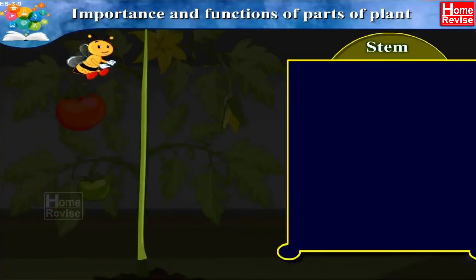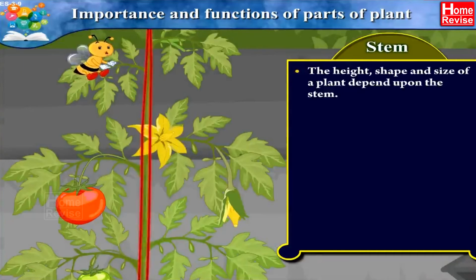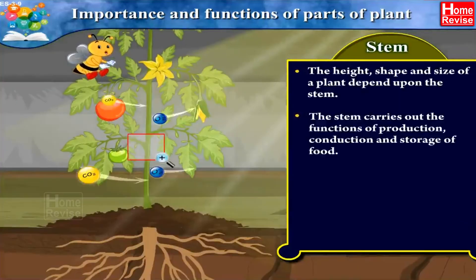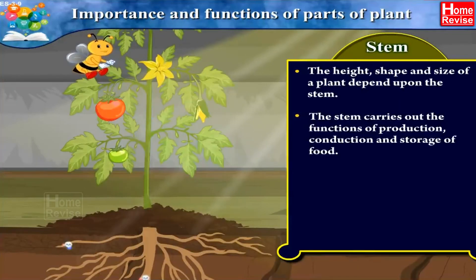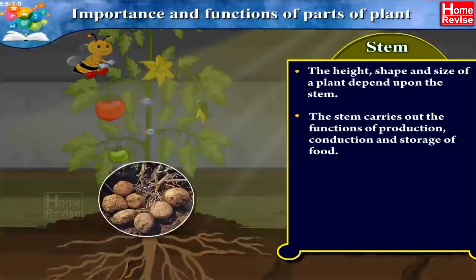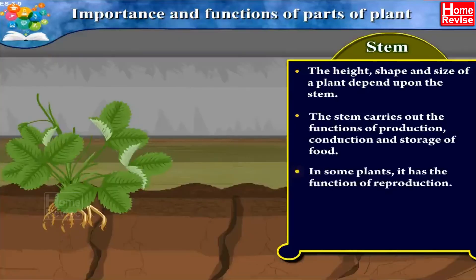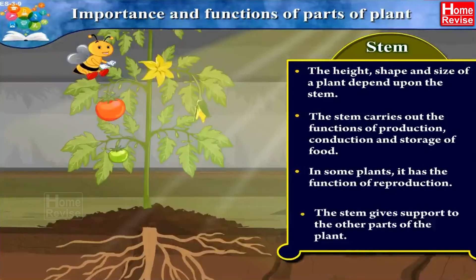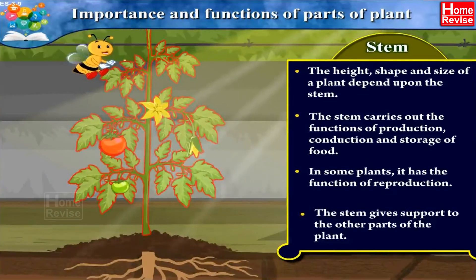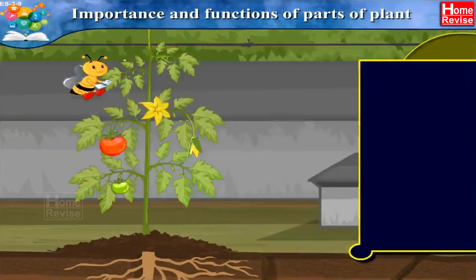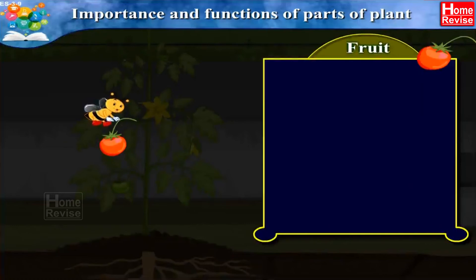The third part of the plant is the stem. The height, shape, and size of a plant depends upon the stem. The stem carries out the functions of production, conduction, and storage of food. In some plants it also has the function of reproduction. The stem gives support to the other parts of the plant.